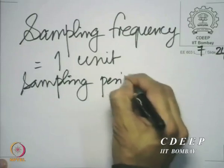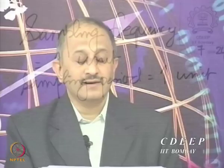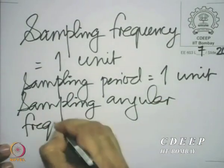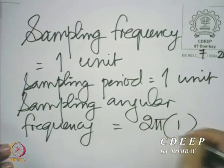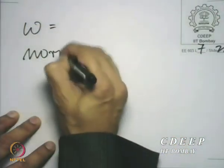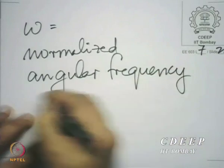Of course, sampling frequency has units of frequency and sampling period has units of time. Therefore, the sampling angular frequency becomes 2 pi times 1 unit. So whenever we are dealing with a discrete system, we will assume we have chosen the unit so that one unit equals the sampling frequency. Therefore the sampling period is 1, and thereby we shall use small omega to denote the normalized angular frequency — the angular frequency in these units.